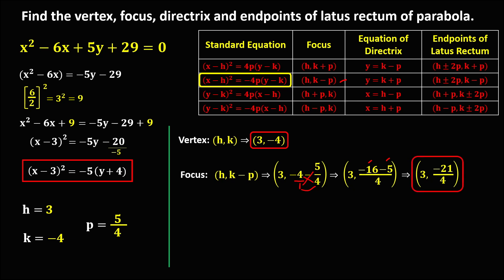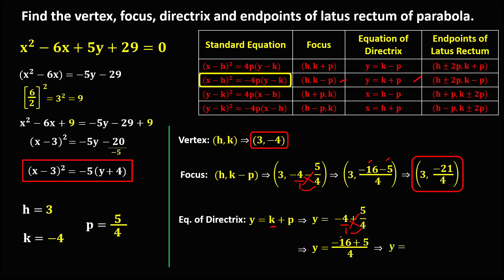For the equation of the directrix, the formula is y equals k plus p. Substituting: k is negative 4, plus p which is 5 over 4. Using cross multiplication: negative 4 times 4 is negative 16, and 1 times 5 is positive 5, over 4. Simplifying: negative 16 plus positive 5 gives negative 11 over 4. So the equation of the directrix is y equals negative 11 over 4.